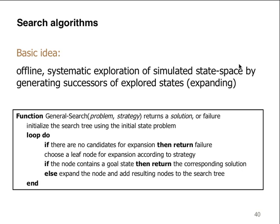What we're looking for is: does something exist or does something not exist? Is this a true-false kind of thing? In terms of the general search, if we were going to look at this in terms of pseudocode, we have a general search with a problem and strategy which returns a solution — hopefully — or a failure, initializing the search tree using the initial state of the problem. It's either going to fail or it's going to find something.